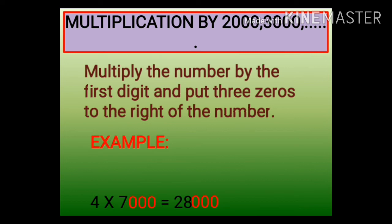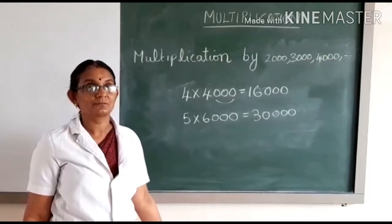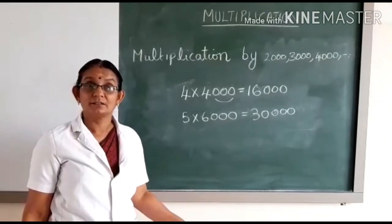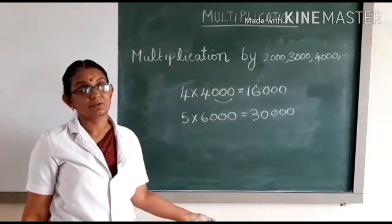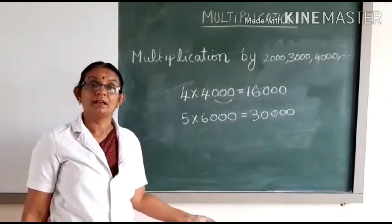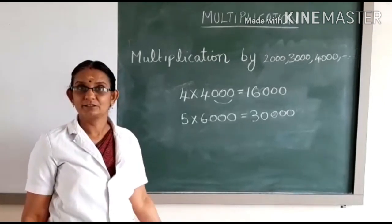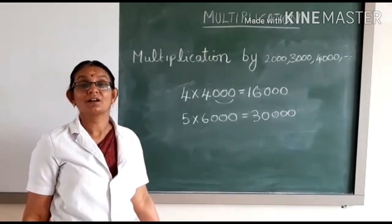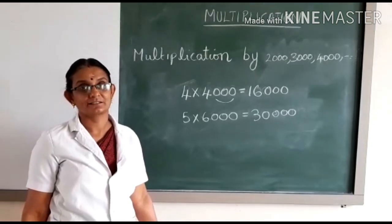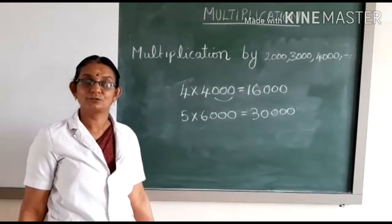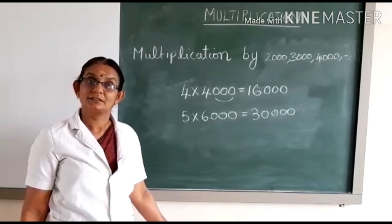So you have learned how to multiply a number by multiples of 1000 — that is 2000, 3000, and so on. I think you have understood, children. Practice more problems at home regarding this multiplication. Also go through the animation video which I have attached in the session. Write the notes and also answer the questions that I have sent. Thank you, see you again soon.